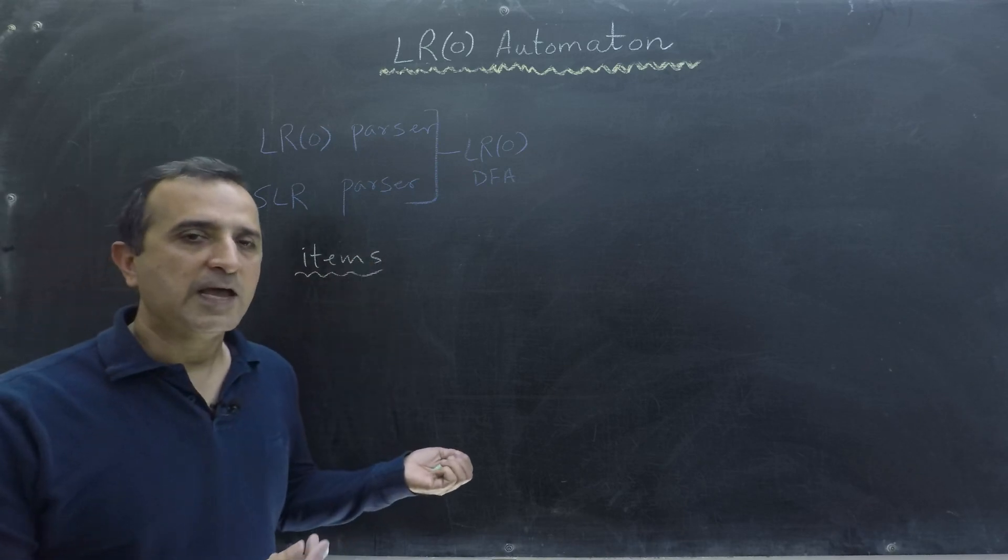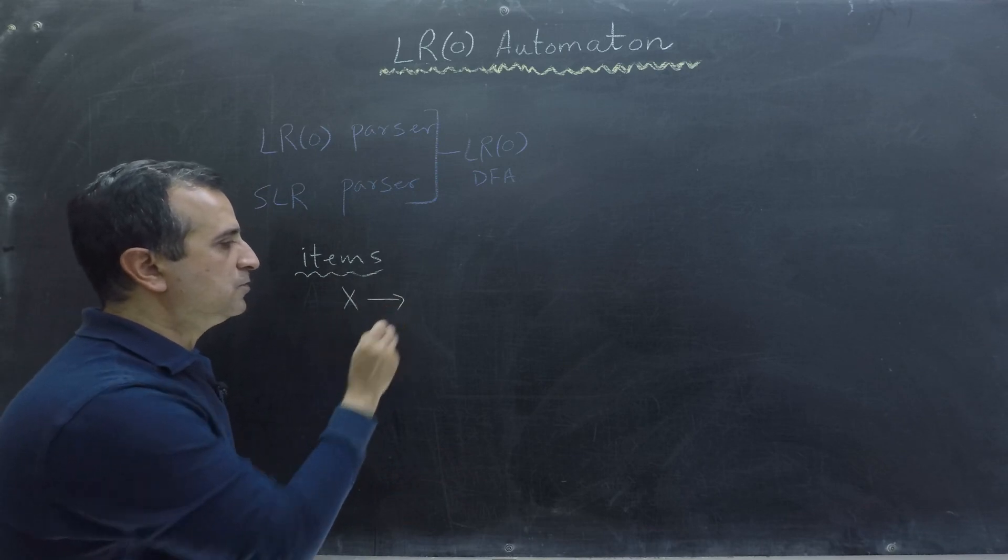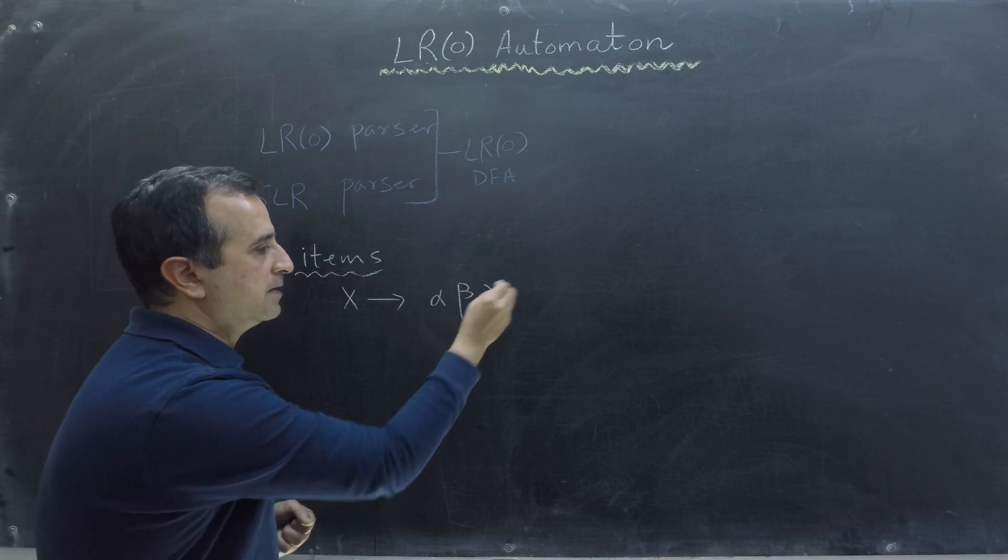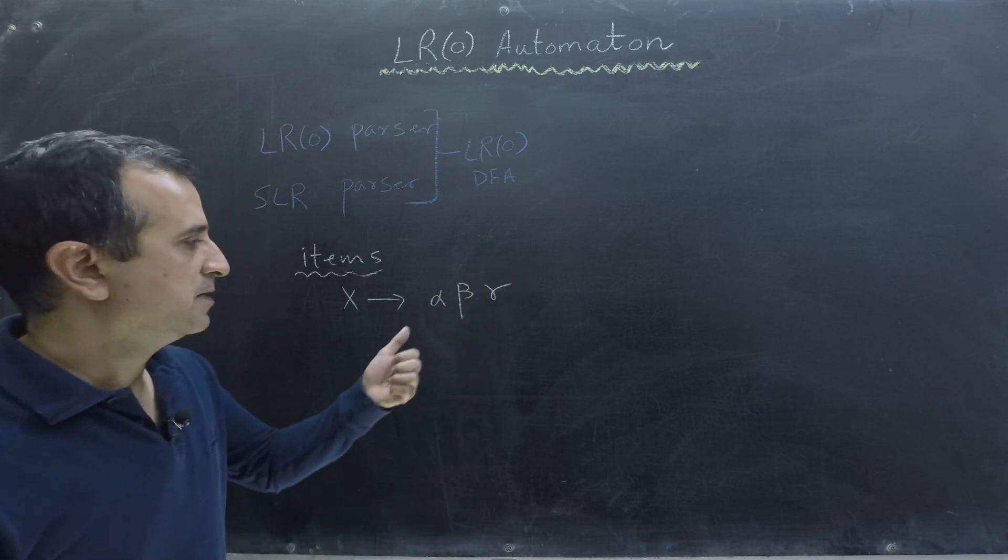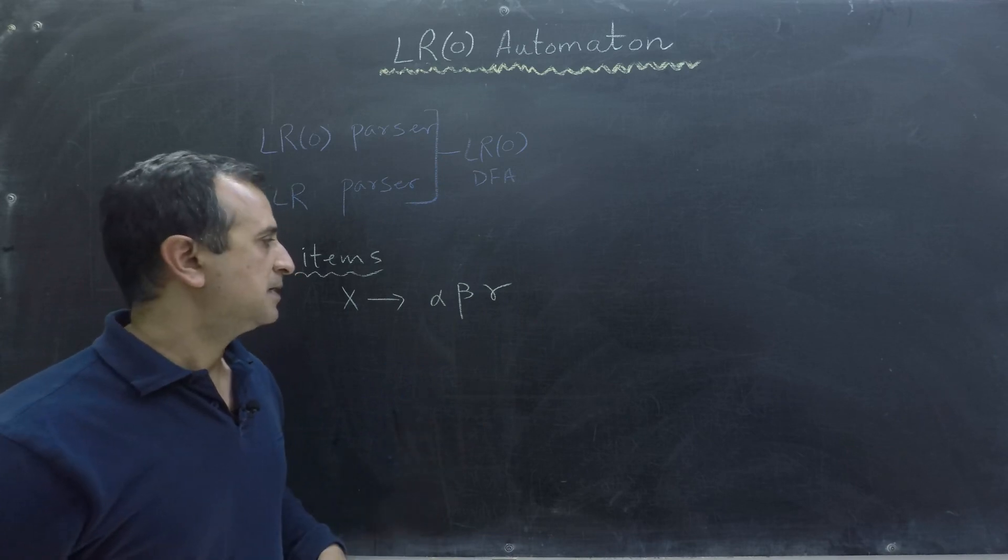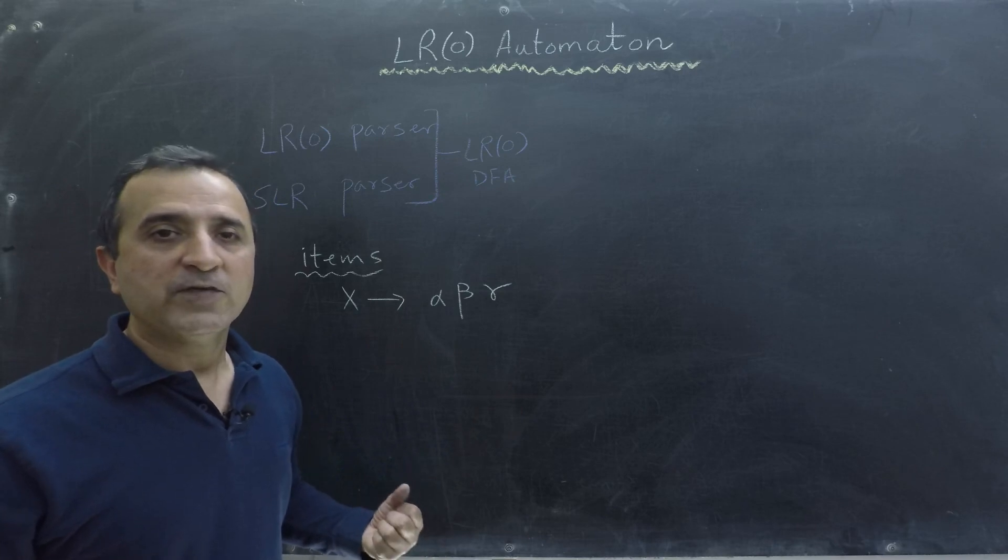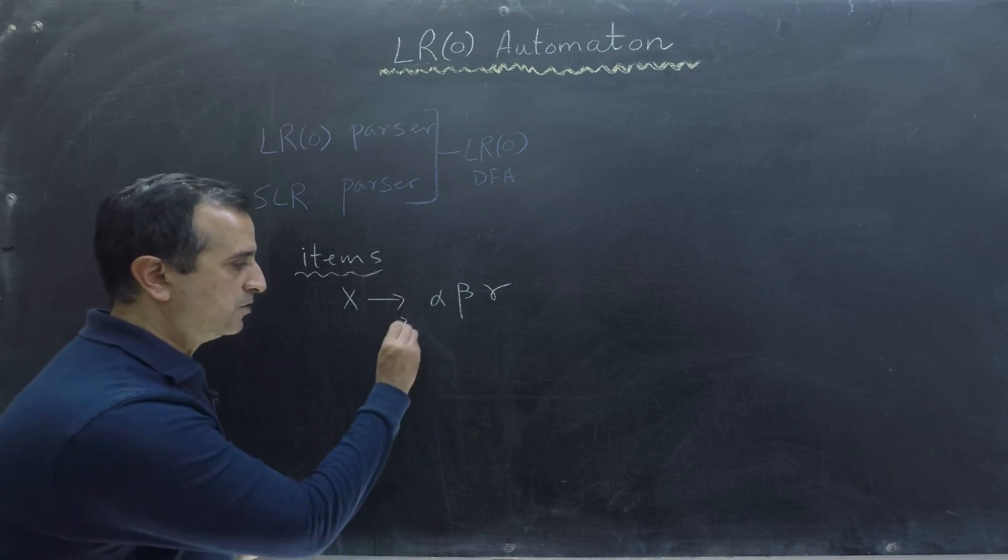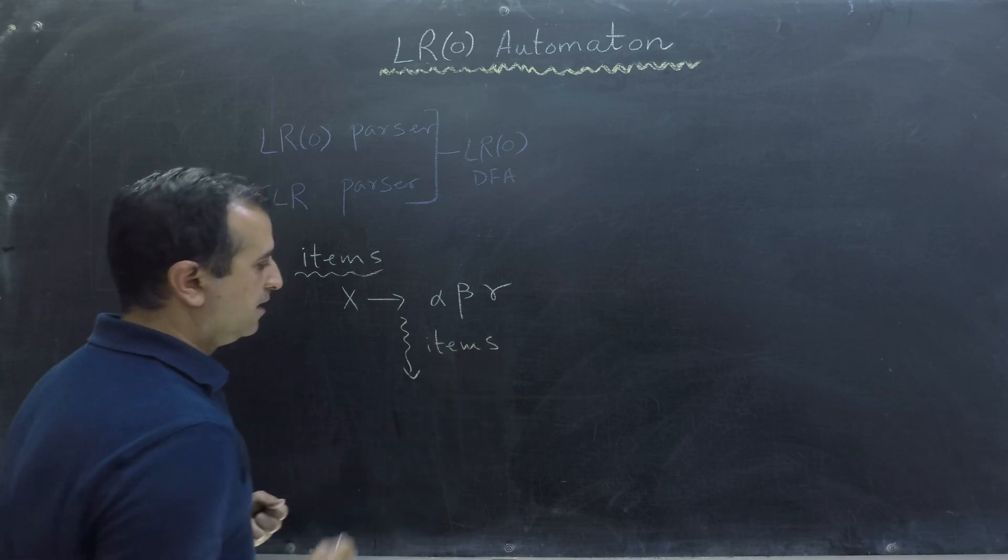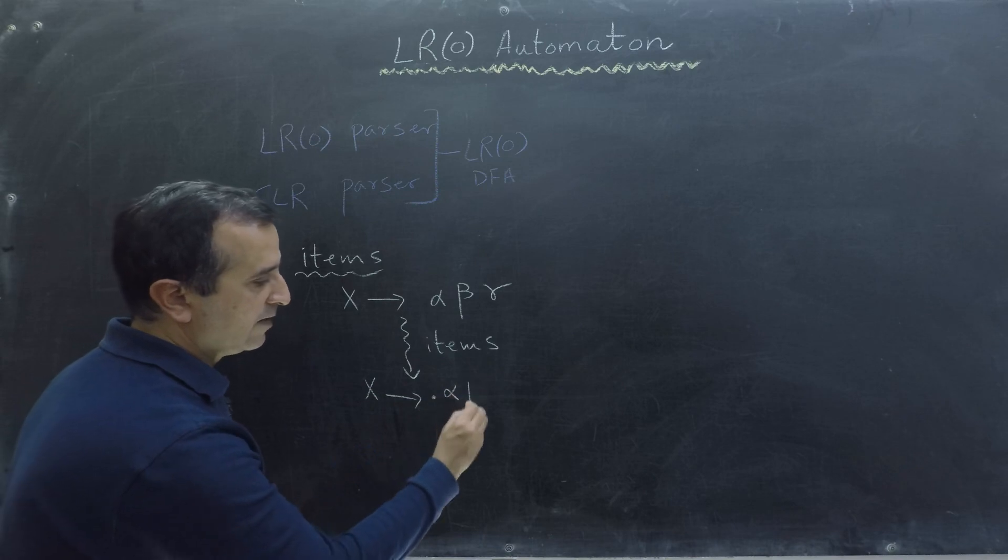If I have a production x goes to alpha, beta, gamma, where this alpha, beta, gamma can be terminals or non-terminals, then from this production we can create four different items.